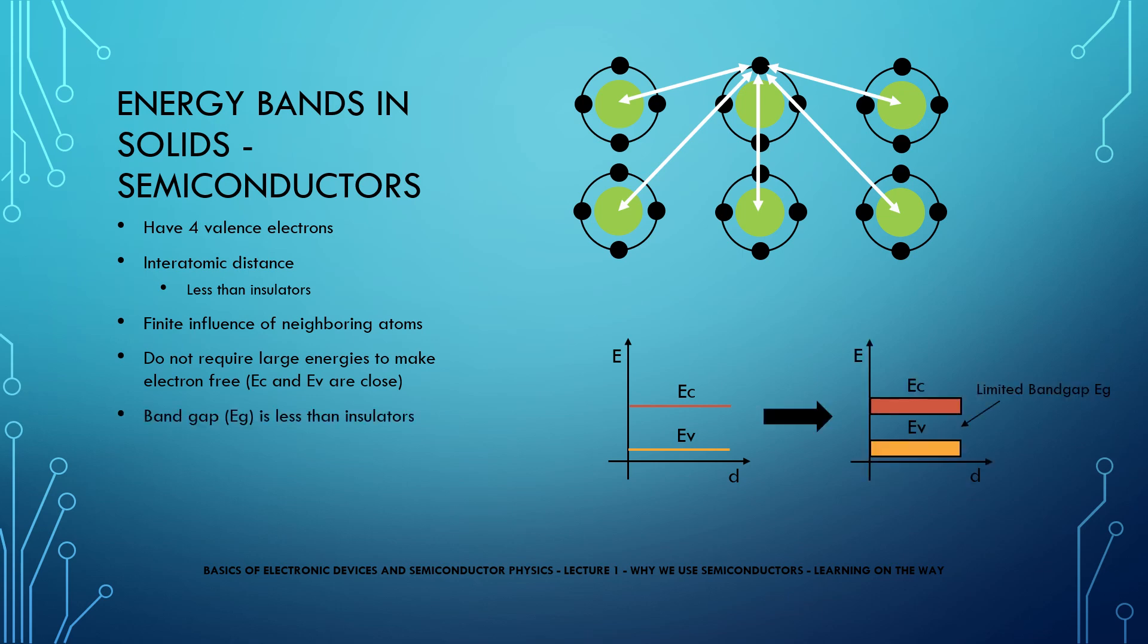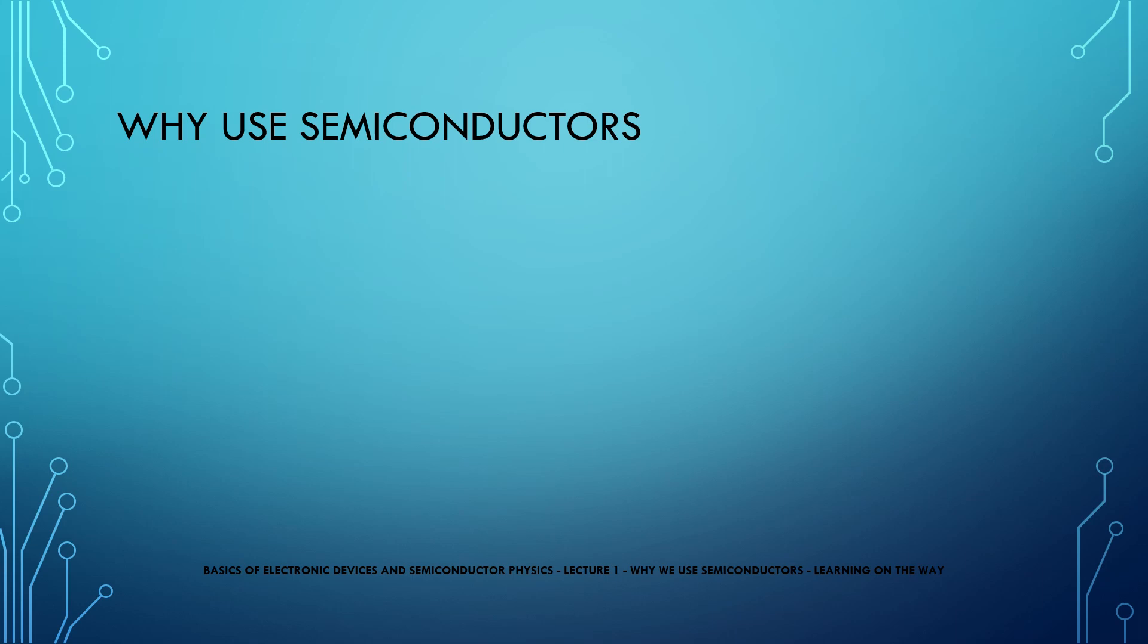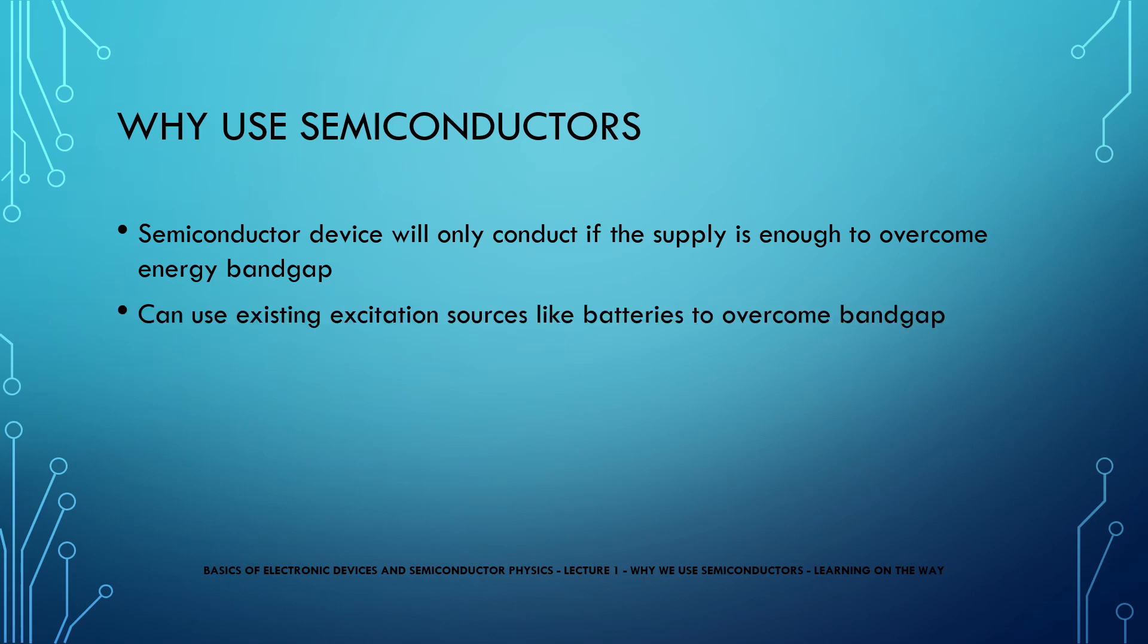For this reason the band gap between valence and conduction band is smaller compared to insulators and that much energy can easily be provided by an external source. Therefore one can say that if a semiconductor device is used in a circuit, it will only conduct if the supply is enough to overcome the energy band gap. Since that can be easily overcome, we can use existing excitation sources like batteries to do this work.